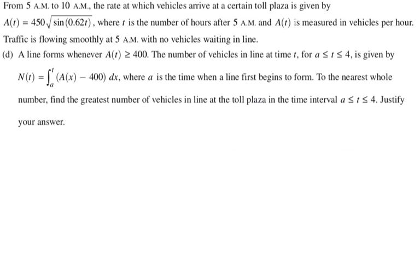A line forms whenever A(t) is greater than or equal to 400. The number of vehicles in line at time t for A less than or equal to t less than or equal to 4 is given by N(t), which is the integral from A to t of A(x) minus 400 dx, where A is the time when the line first begins to form. To the nearest whole number, find the greatest number of vehicles in line at the toll plaza in the time interval from A to 4.